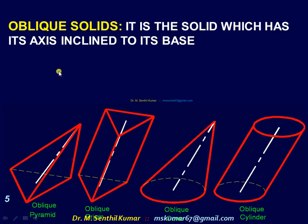Now we will see about other types of solids that are not in the university syllabus. Oblique solids — it is a solid which has its axis inclined to the base.